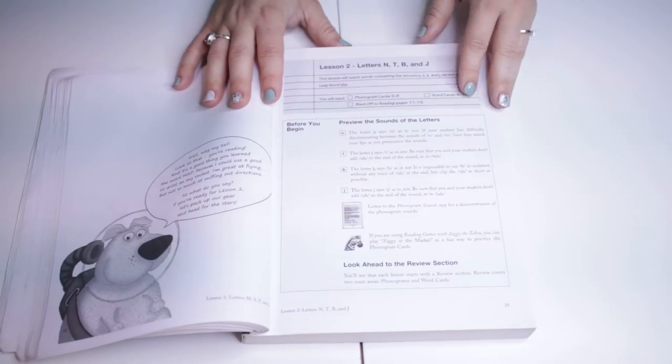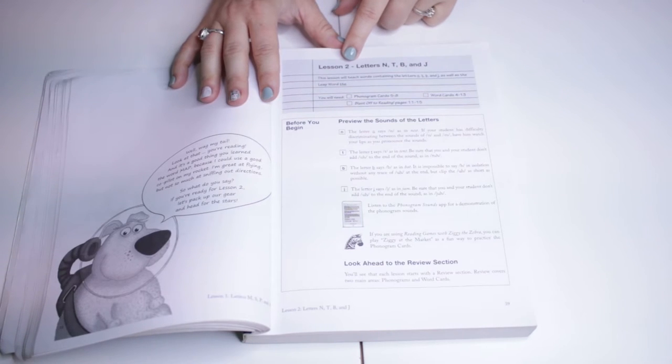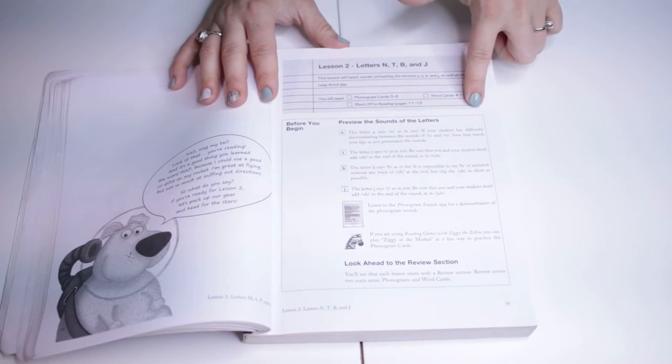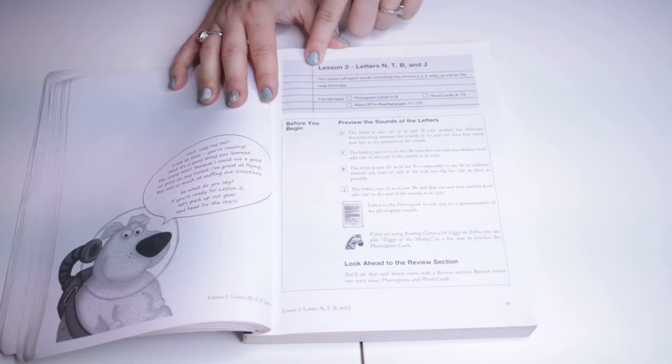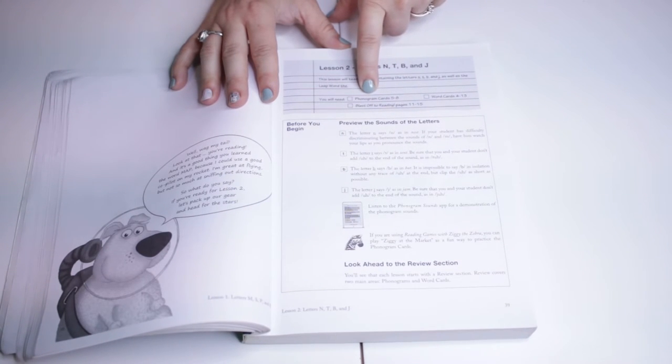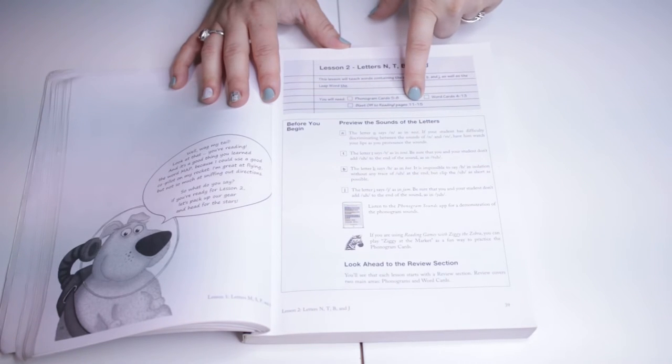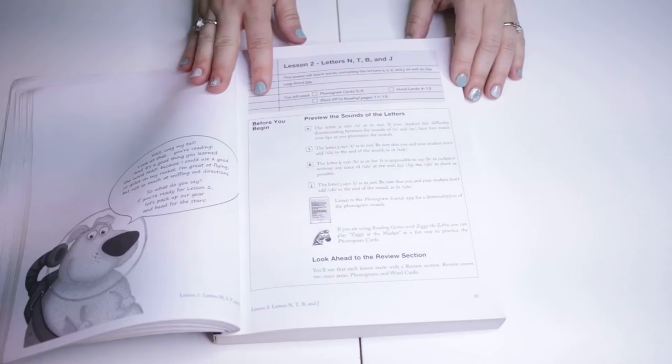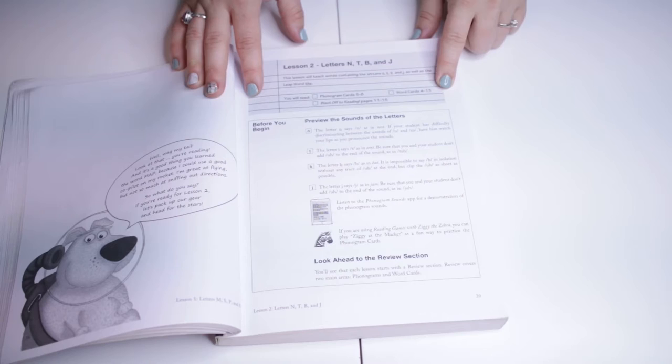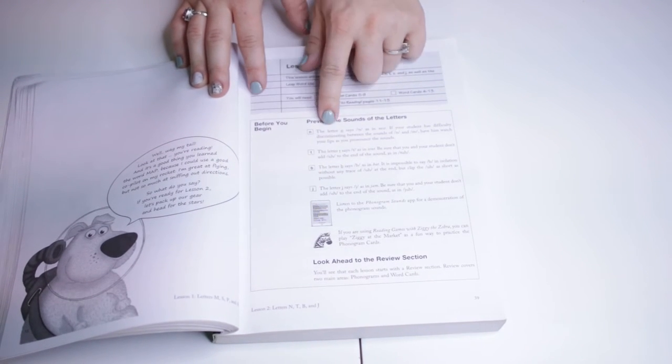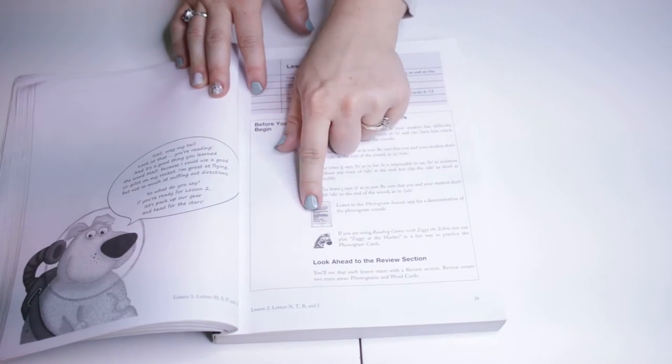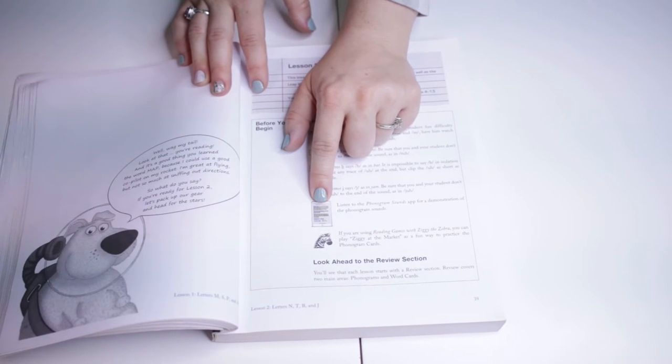So in lesson two, here are the letters that you will learn. This section will tell you exactly what you need for that lesson. So today we would need the phonogram cards and word cards, and you need Blast Off to Reading pages 11 through 15 to do this lesson. And then you're going to go ahead and preview the sounds of the letters. And they give you the letters here, they tell you exactly what to say. Once again you can pull out the phone app and work on those sounds if you'd like.